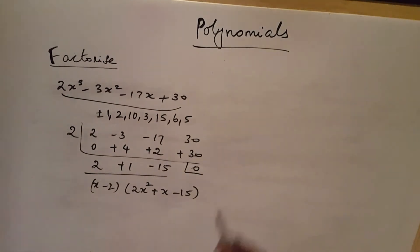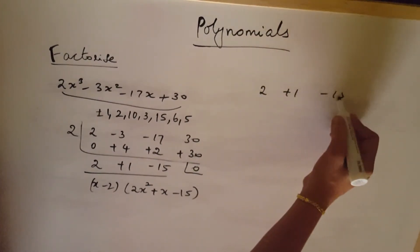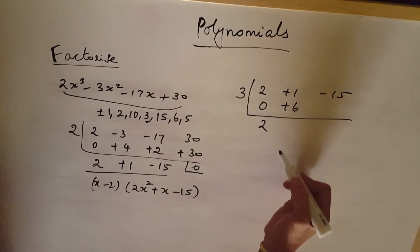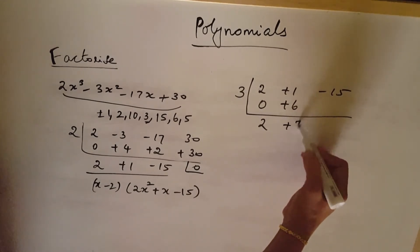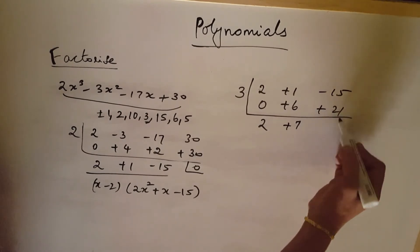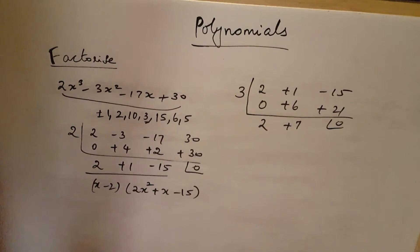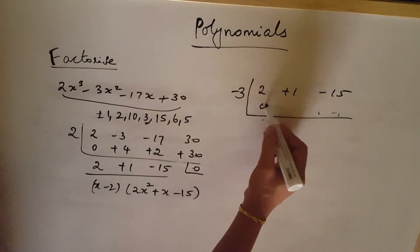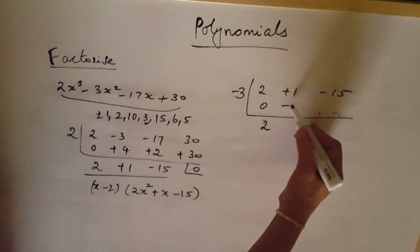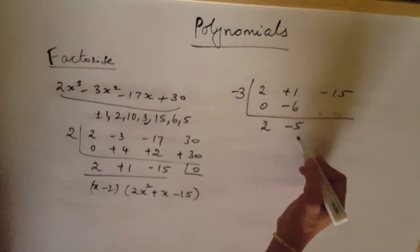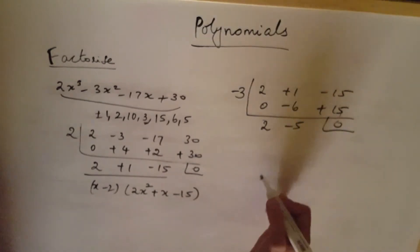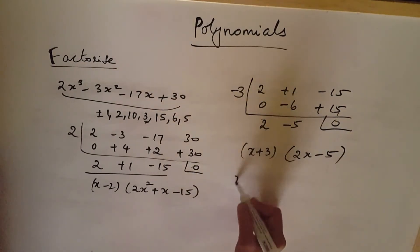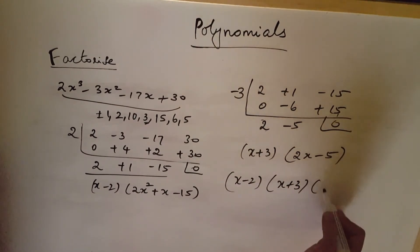Now factoring 2x squared plus x minus 15. Trying 3: gives 2, 6, plus 7, 21 — not 0. Trying minus 3: 2, minus 6, minus 5, minus 3 into minus 5 gives plus 15, remainder 0. So x plus 3 is a factor and 2x minus 5 is the other. Final answer: x minus 2, x plus 3, 2x minus 5.